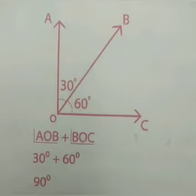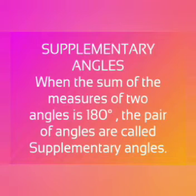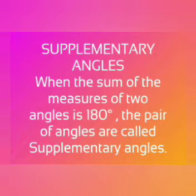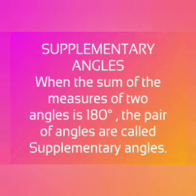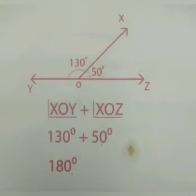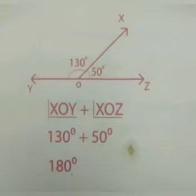The next one is supplementary angles. When the sum of the measures of two angles is 180 degrees, that pair of angles is called supplementary angles. When we add together and get 180 degrees, that is supplementary angles. For example, angle XOY is 130 degrees and angle XOZ is 50 degrees — so 130 degrees plus 50 degrees equals 180 degrees.